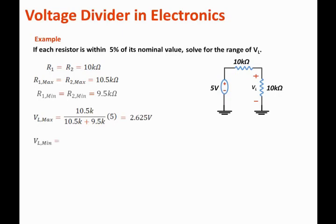So we can state that VL_Min is equal to 9.5k, that's the minimum resistance, over 10k, that's the maximum of the input resistance, plus 9.5k, that's the minimum output resistance, times the 5 volts, and that is equal to 2.375 volts.